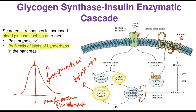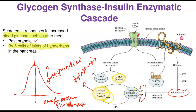Glycogen synthase D (the inactive form) is also affected by glucose-6-phosphate as an allosteric activator. Glucose-6-phosphate binds to glycogen synthase D and initiates its dephosphorylation back to glycogen synthase I (active), also promoting glycogenesis.